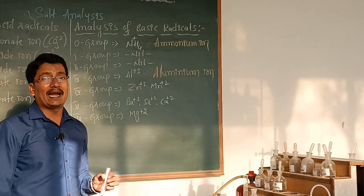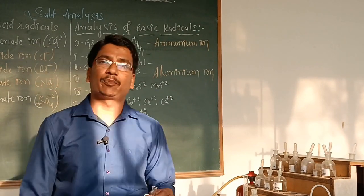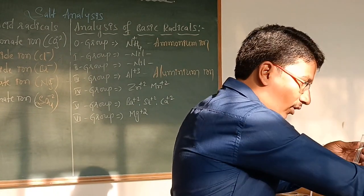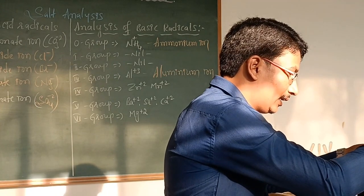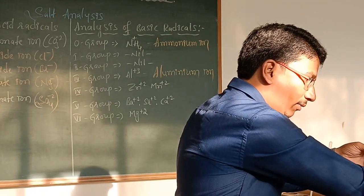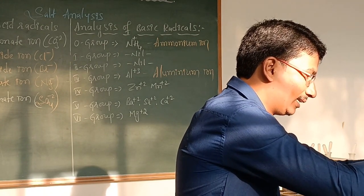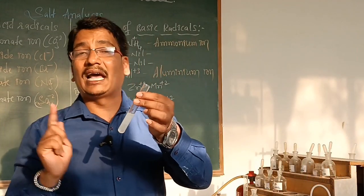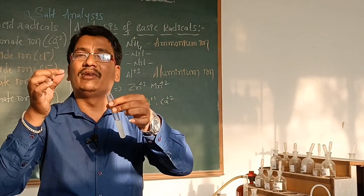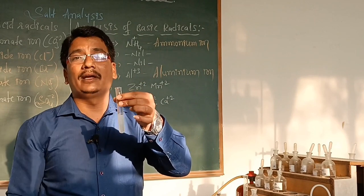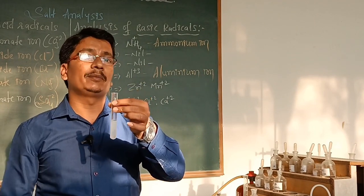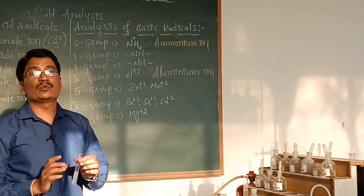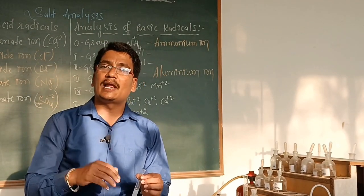For detection of the sixth group cation, the original solution plus solid NH4Cl plus NH4OH, then we add Na₂HPO₄. If a crystalline precipitate is formed, it confirms the presence of magnesium ion. If it is not formed immediately, scratch the sides of the test tube — then it will appear as a crystalline precipitate, confirming magnesium ion. There is no separate confirmation test for magnesium ion; this one test serves as both the group reagent test and the confirmatory test.